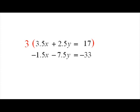After some careful thought, we can see that it would make sense to multiply everything in the top equation by the number 3. This gives us 10.5x plus 7.5y is equal to 51, and the second equation remains unchanged.